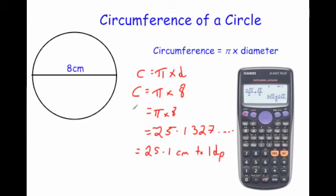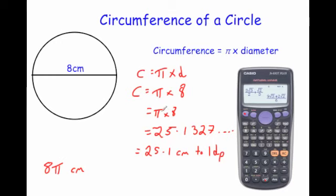If this is a non-calculator question you may be asked to leave your answer in terms of pi. That means instead of calculating pi times 8, you just write 8 pi centimetres. If it ever says 'in terms of pi', you put the number and pi together like an algebraic multiplication and just write 8 pi.